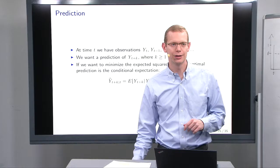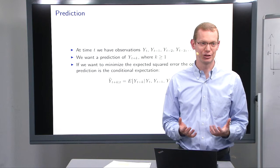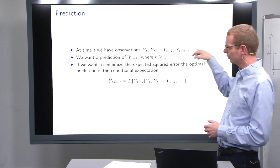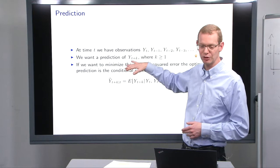The next part is to look at predictions. What we have are observations up to time t, which means we also have previous observations t minus 1, t minus 2, t minus 3, and so forth. What we typically want to do is make a prediction of y at time t plus k, where k is a number greater than or equal to 1.